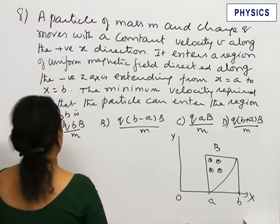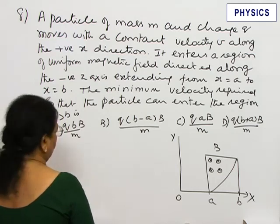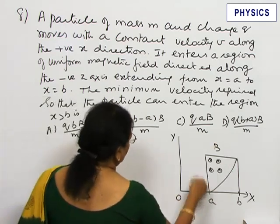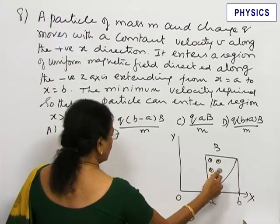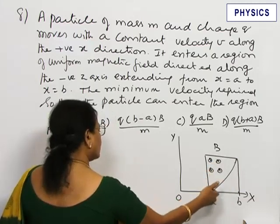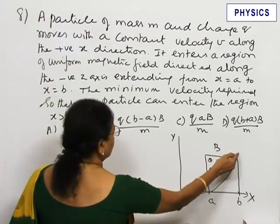The minimum velocity required so that the particle can enter the region X greater than B. This is based on the magnetic Lorentz force. The particle experiences a force perpendicular to its velocity which acts as a centripetal force, and the path of the particle gets deflected.